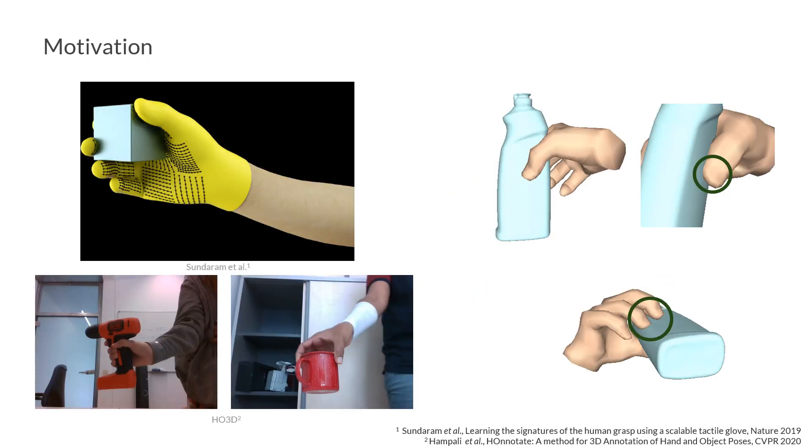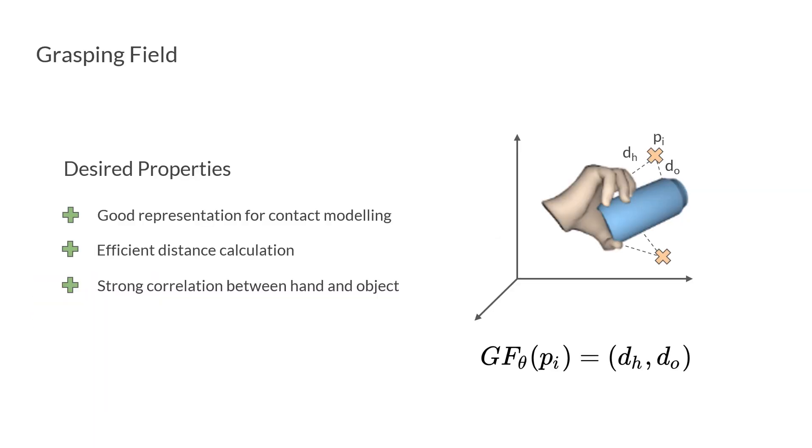Our key observation is that, although contact is fundamental for grasping, previous methods for hand-object interaction do not explicitly model contact. Inspired by recent implicit representation methods, we propose a novel representation for hand and object interaction.